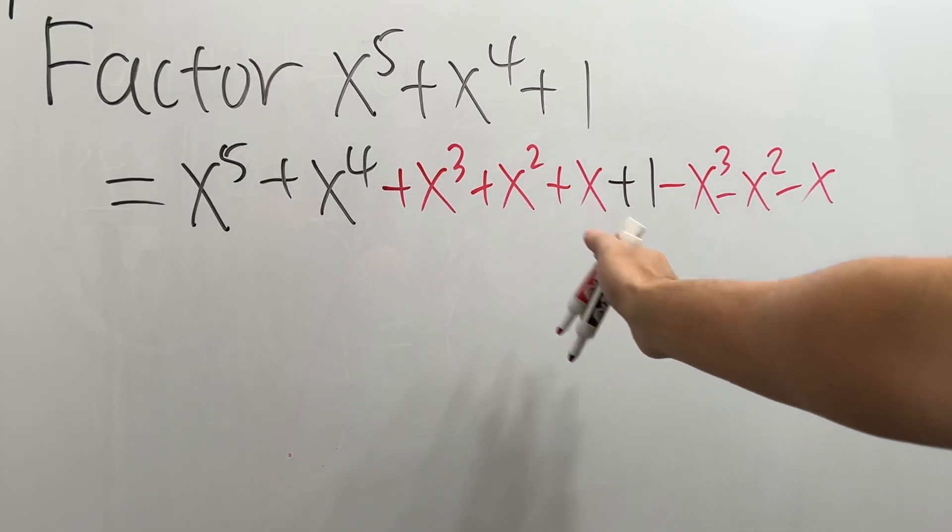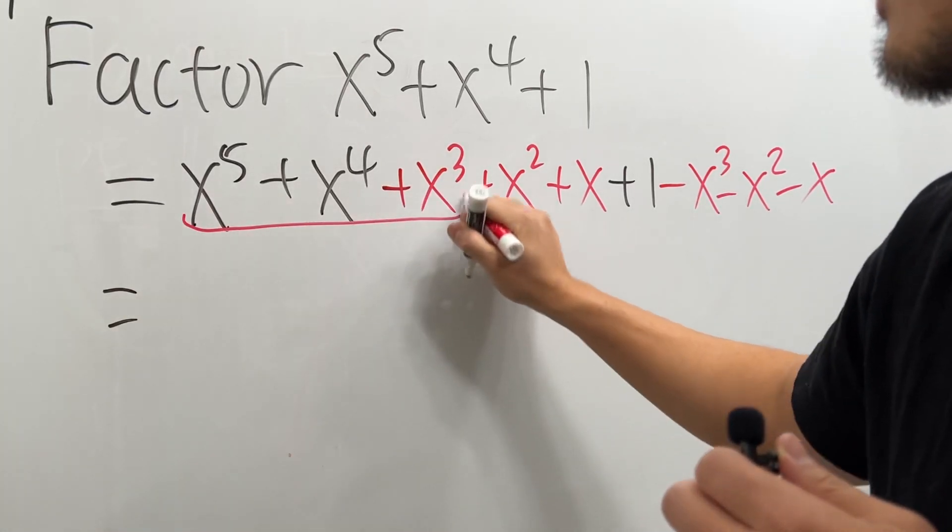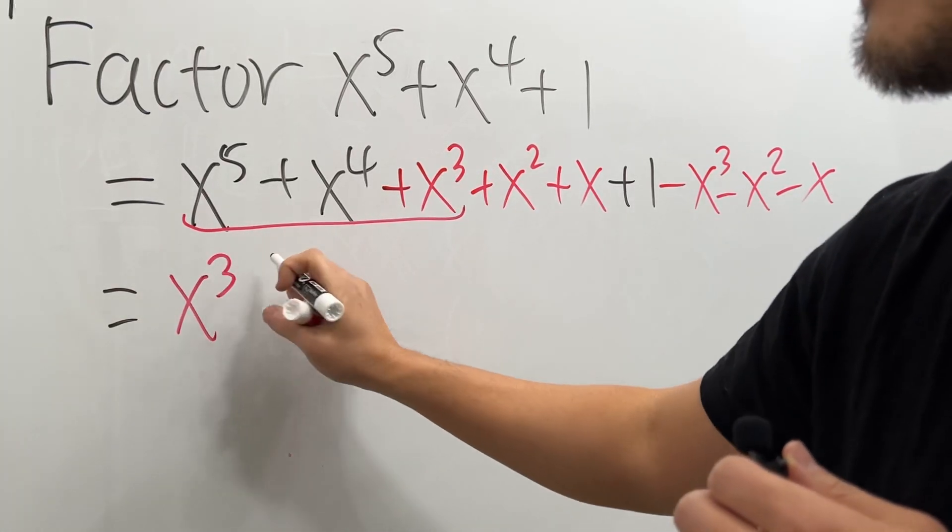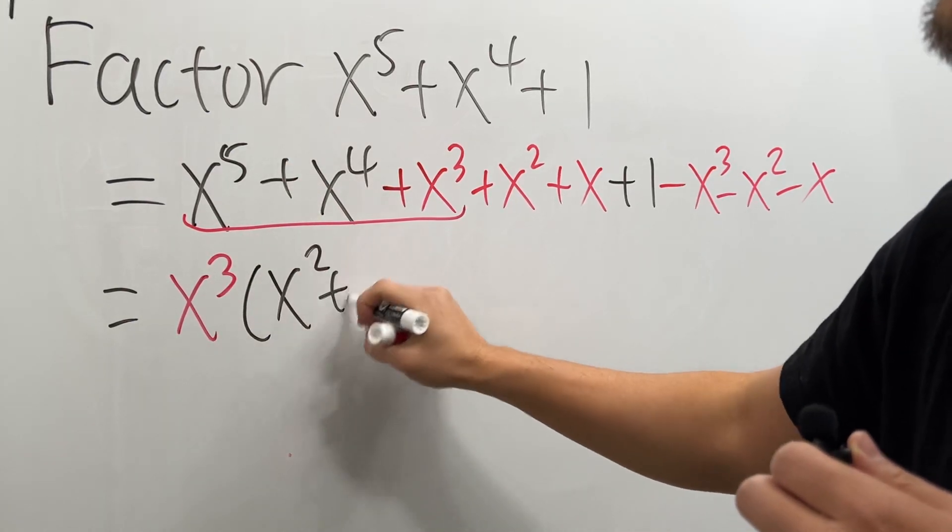Now we can do this by factor by grouping. So as you can see, the first three terms right here, we can factor out x to the 3rd power. And then we're left with x squared plus x plus 1.